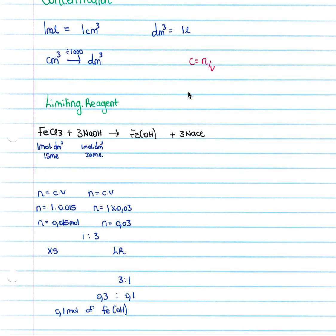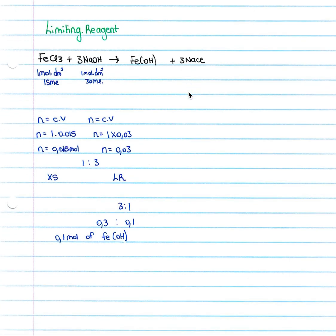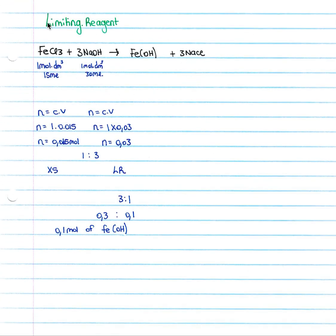Then we look at a section which is very often tested in your exams and tests, and that is your limiting reagent. So if we look at something like this where we have FeCl3 plus 3 NaOH forming Fe(OH)3 plus 3 NaCl, and they tell us we have one mole per decimeter cubed of this and 15 milliliters and one mole per decimeter cubed of this concentration and 30 milliliters.